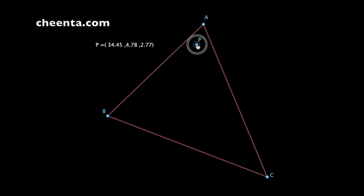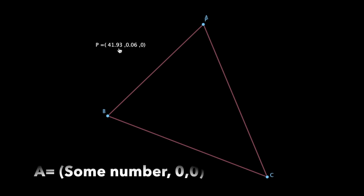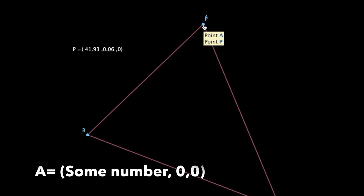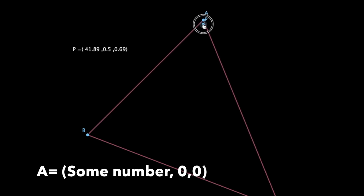Let's do an experiment and put the point P on vertex A. What happens if we do that? You see, it almost reduces the other two coordinates to 0, and the first coordinate becomes 41.93. Actually, if we do it very carefully, both of these coordinates will be 0, and only the first coordinate will be 42 or something like that.